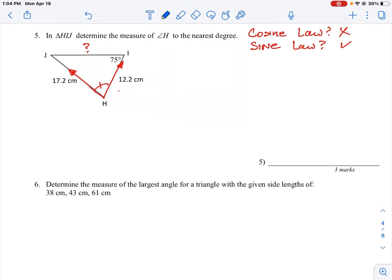So if we take a look at what we've got here, we have a measure of an angle, 75, which is directly across from a known length of 17.2. So that's one of our angle side pairs.